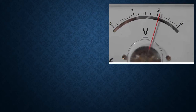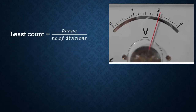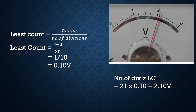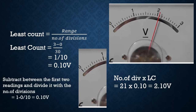Now let us find the least count and reading of this voltmeter using the same procedure. The least count is 0.01 volt and the reading is 2.10 volt because the pointer is on the 21st division. Alternatively, instead of using the full range, you can take any two consecutive full readings — for example, 0 and 1 — subtract them, and divide by the number of divisions between them: 1 minus 0 divided by 10 equals 0.10 volt per division.